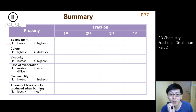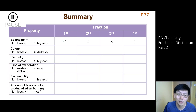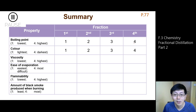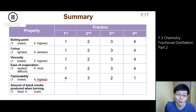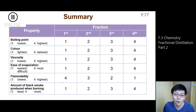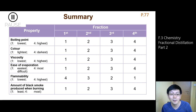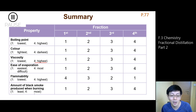The boiling point: from fraction 1 to 4, fraction 1 has the lowest boiling point and fraction 4 has the highest. The color: fraction 1 has the lightest color; fraction 4 has the darkest. Viscosity increases from fraction 1 to 4. Ease of evaporation decreases from fraction 1 to 4. Flammability: fraction 1 is the easiest to burn. The amount of black smoke increases from fraction 1 to 4 — it becomes more and more difficult to burn, darker in color, higher viscosity, and burns with a larger amount of black smoke.